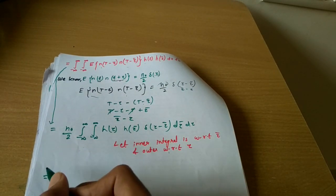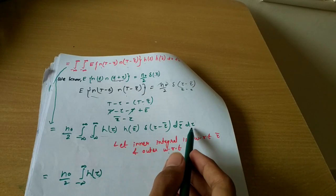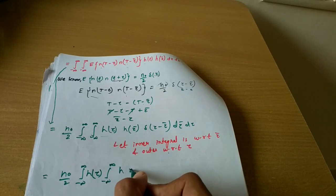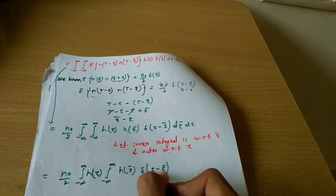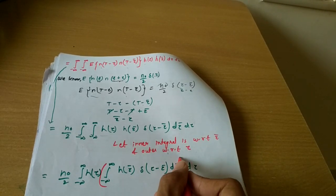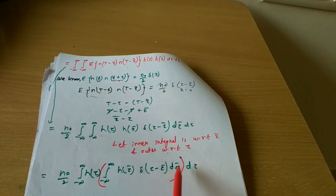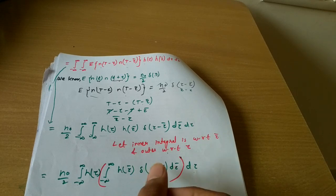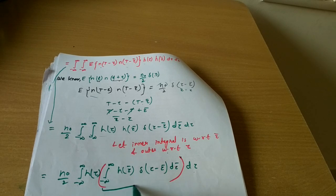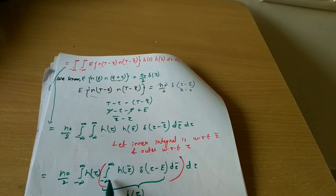Proceeding with this assumption: N₀/2 is outside. We have h(τ) as the outer integral and the inner integral over τ̃. The inner integral contains h(τ̃) times δ(τ - τ̃) dτ̃. By the sifting property of the delta function, this inner integral directly evaluates to h(τ), because the delta function picks out the value of h at τ̃ = τ.